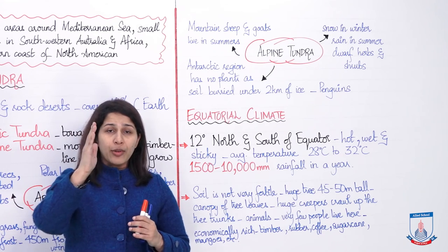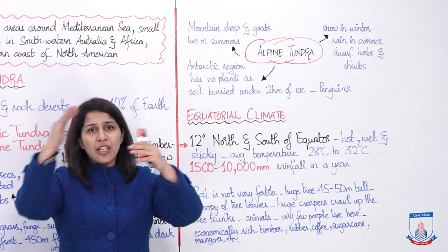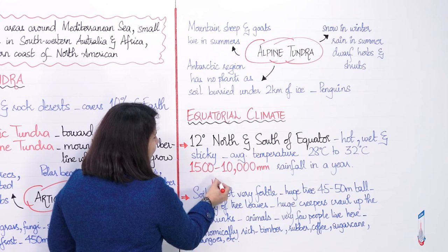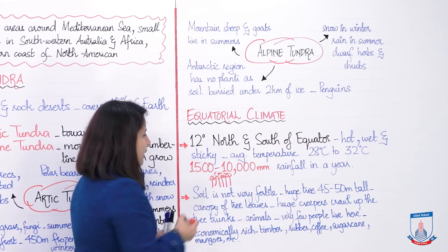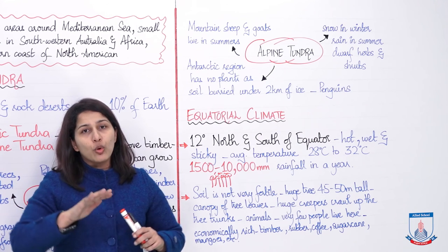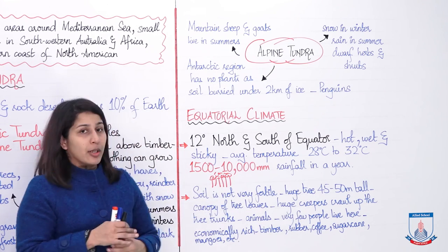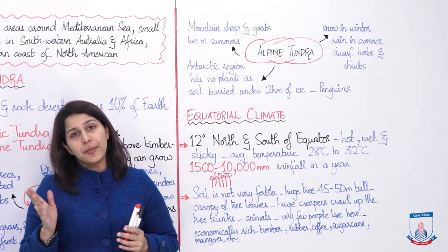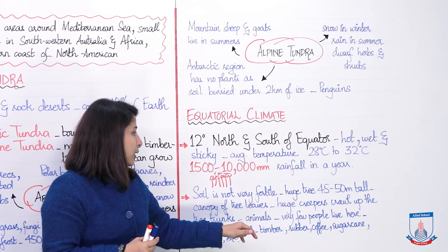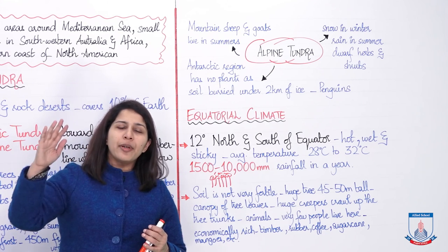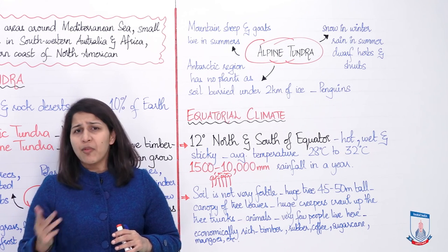In mein lambe lambe darakht grow karte hain jinki trunks bilkul straight hoti hain, aur bahut lambe trunks ke baad oopar jaake ek canopy si ban jaati hai — chhat si — jab woh tree leaves akathe ho jaate hain. Iss canopy ki wajah se neeche wala area bilkul dhoop nahi milti aur woh ek twilight ka region ban jaata hai. Huge creepers grow up the tree trunks. Tree ke upper regions mein monkeys aur birds hain, aur lower regions mein lizards, snakes, insects, aur butterflies hain.